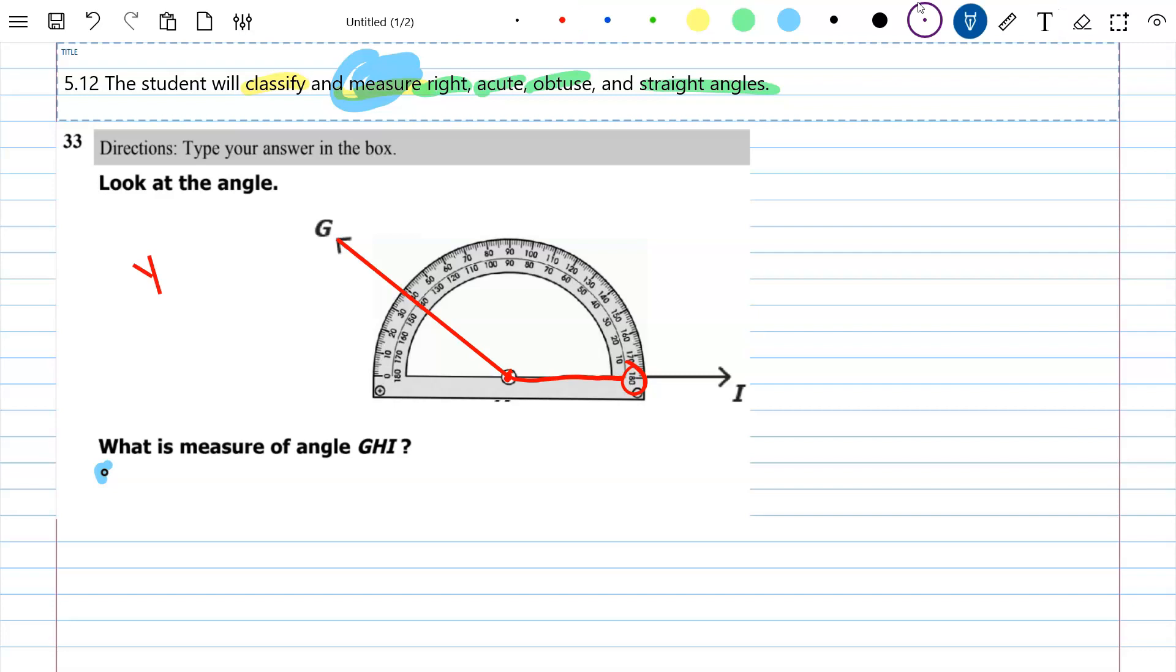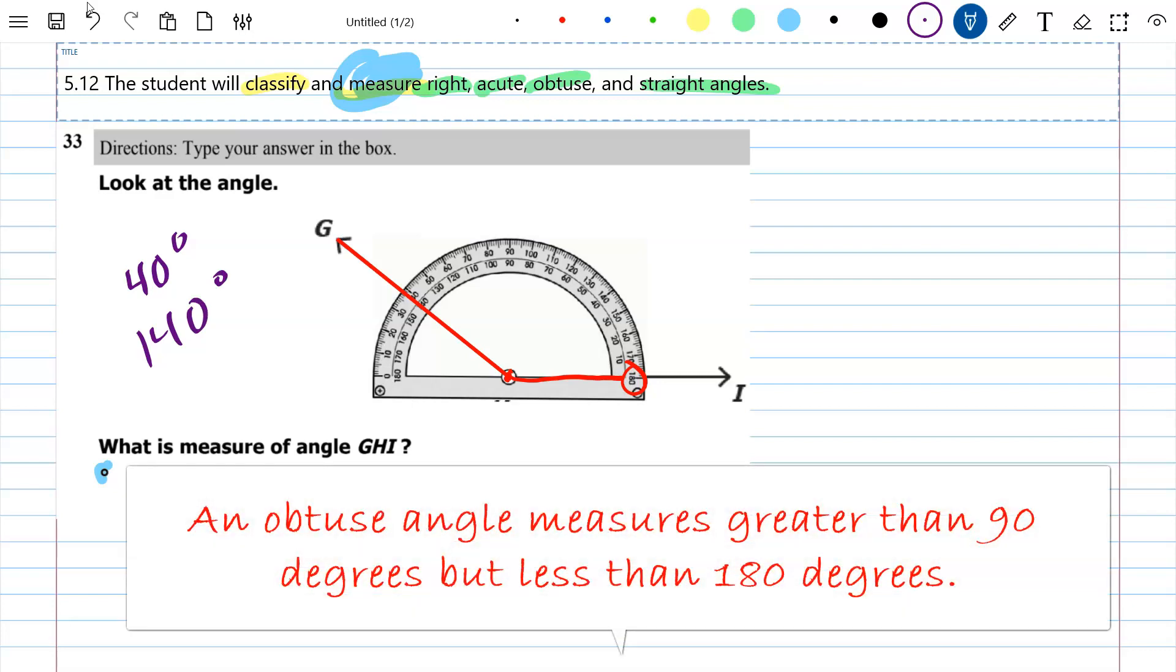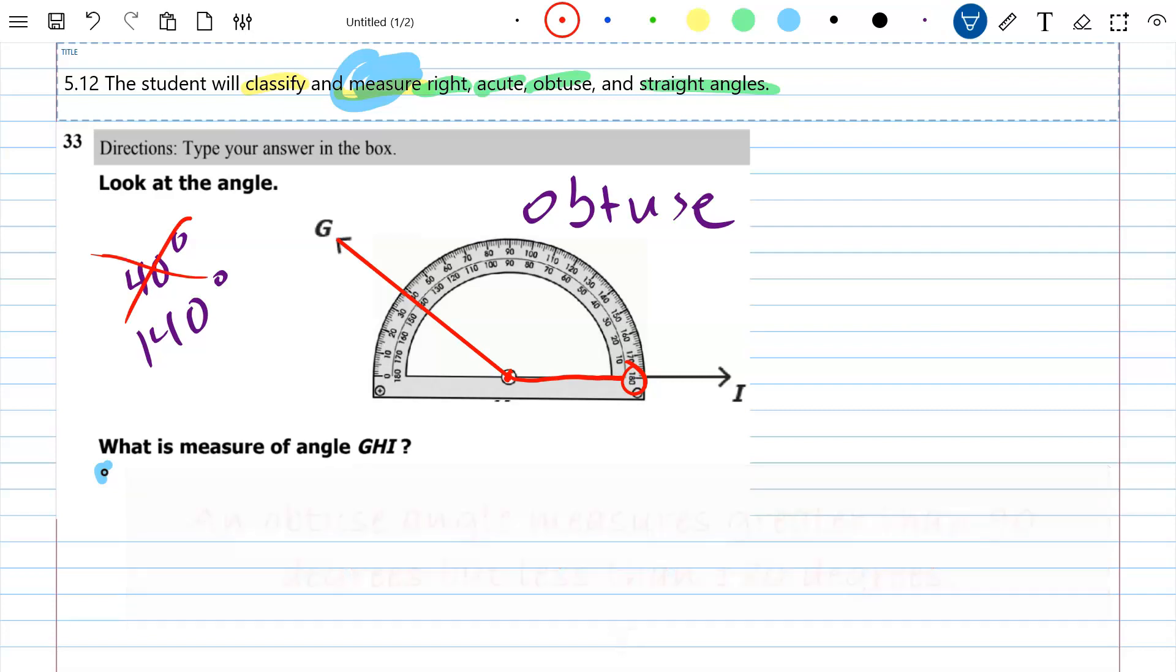Which of these two answers best fits? Is it going to be 40 or is it going to be 140? Well, that all goes to what type of angle do I have here. It's leaning back, it's an obtuse angle, so that means 40 is way too small.